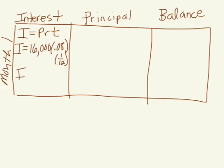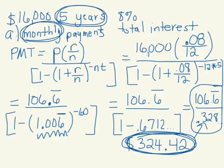$16,000 times 0.08 divided by 12. That means, for our first month, our interest is $106.67. The amount of money, our monthly payment is $324.42.